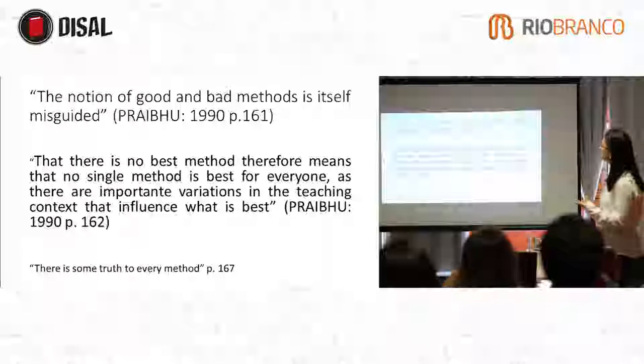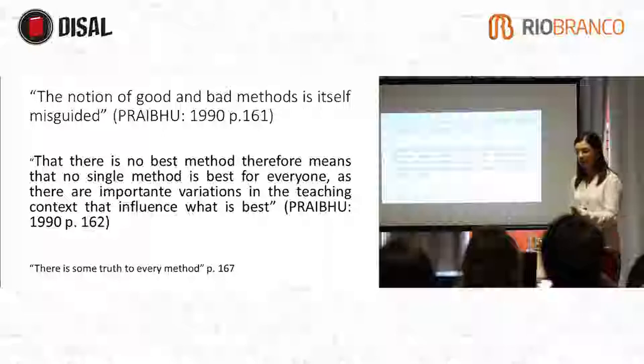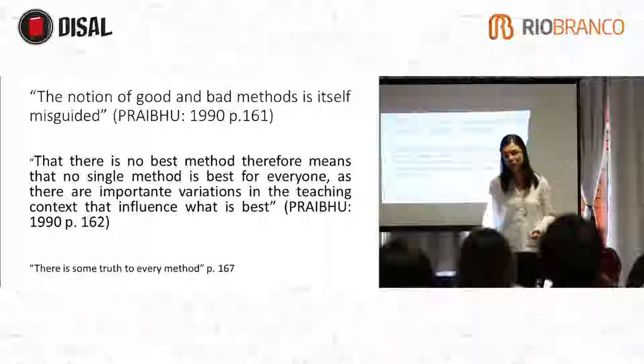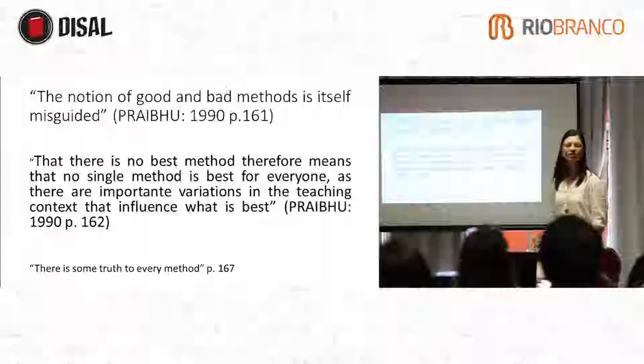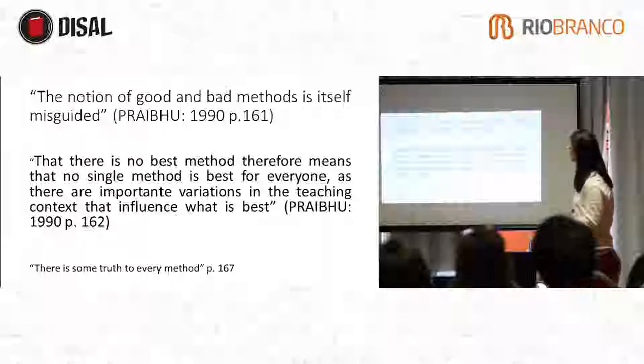As there are important variations in the teaching context that influence what is best, we could see that our contexts are different. Some people teach private students. Some people teach full-time students. Some people teach in a school specialized for children. Some people are specialized for adults. So our contexts are really different, and we can't have one single method.